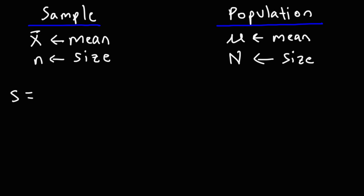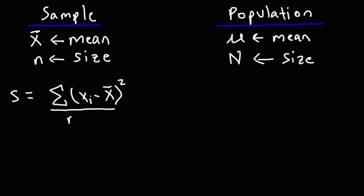s represents the standard deviation of the sample. To calculate the sample standard deviation: take the difference between each data point and the sample mean, square that difference, sum all those squared differences, divide by n minus 1, and then take the square root of the result.